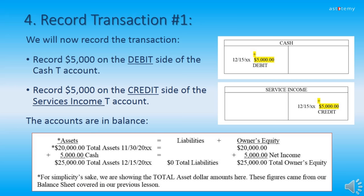Now we're ready for Step 4, recording Transaction 1. We record $5,000 on the debit side of the Cash T-Account, remembering to put the date, the amount, and for now the plus sign and the word debit underneath. Then we record $5,000 on the credit side of the Service Income T-Account with the date, amount, and plus sign with the word credit. As you can see by the diagram, the accounts are still in balance. Refer to this diagram in your handout as we discuss the impact.